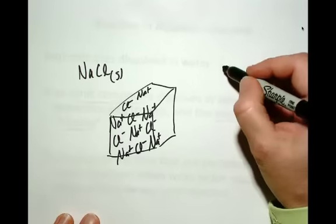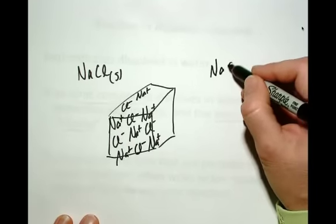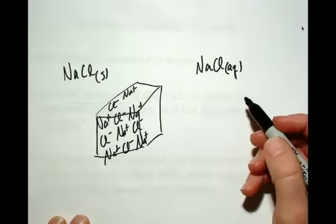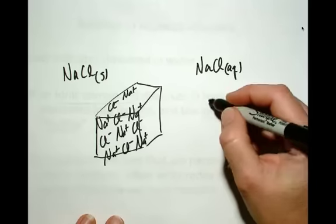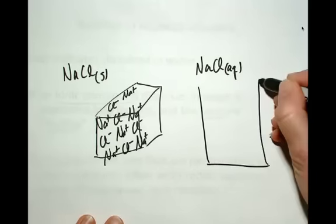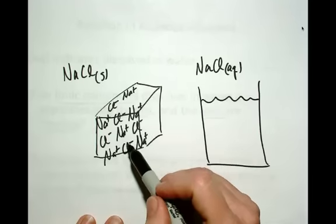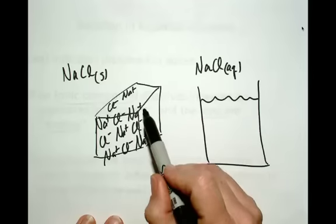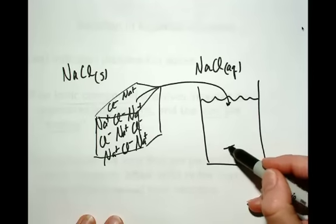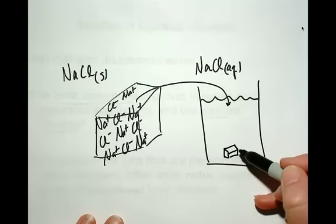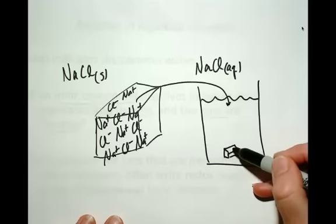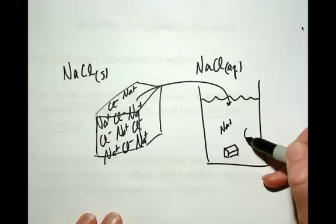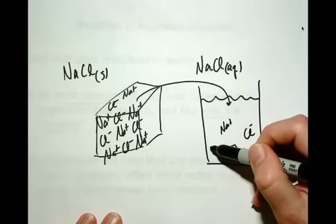Whenever you see sodium chloride (aq), the aqueous tells you that ionic compound is dissolved in water. When dissolved, sodium and chloride are no longer fixed in crystal positions. When you put that crystal into water, the sodium and chloride ions on the surface are pulled into solution and float around surrounded by water molecules. We'll get into this more later when we talk about water.